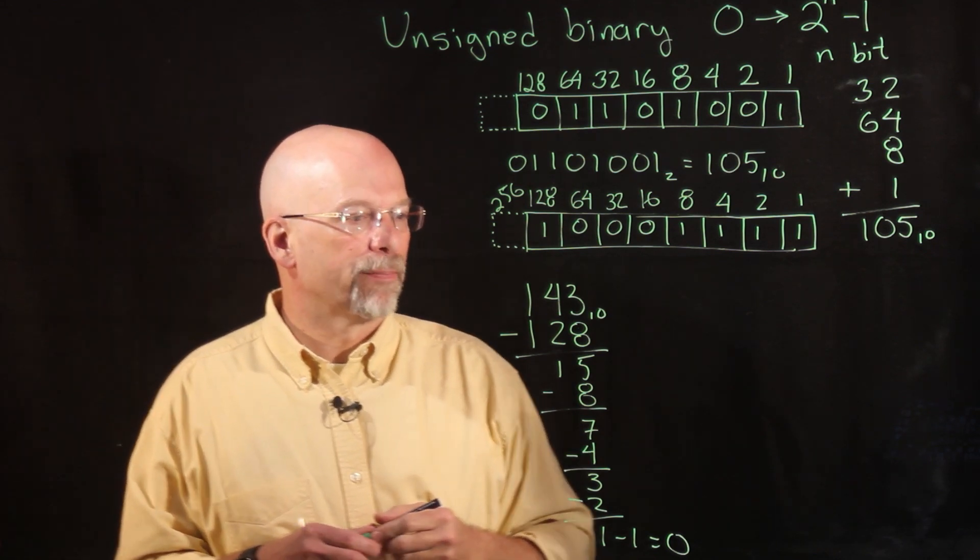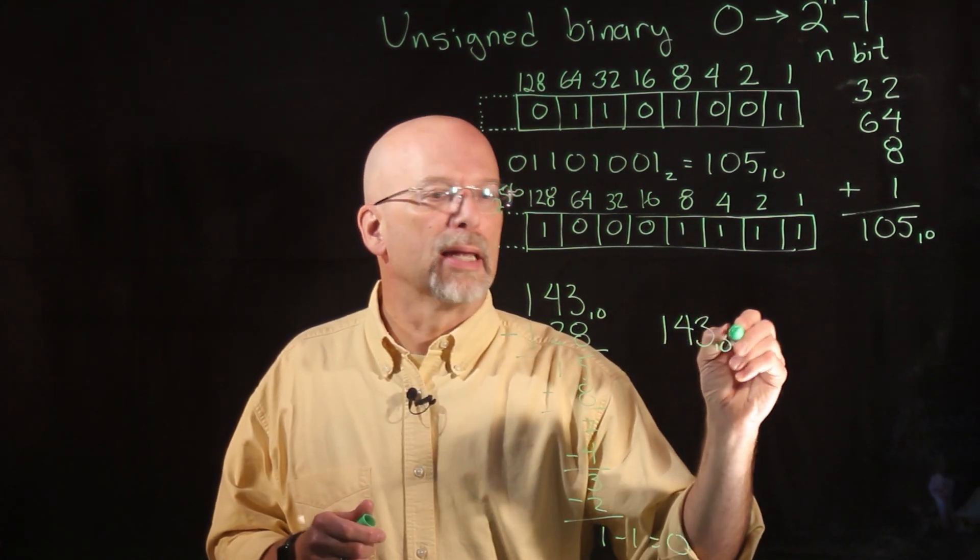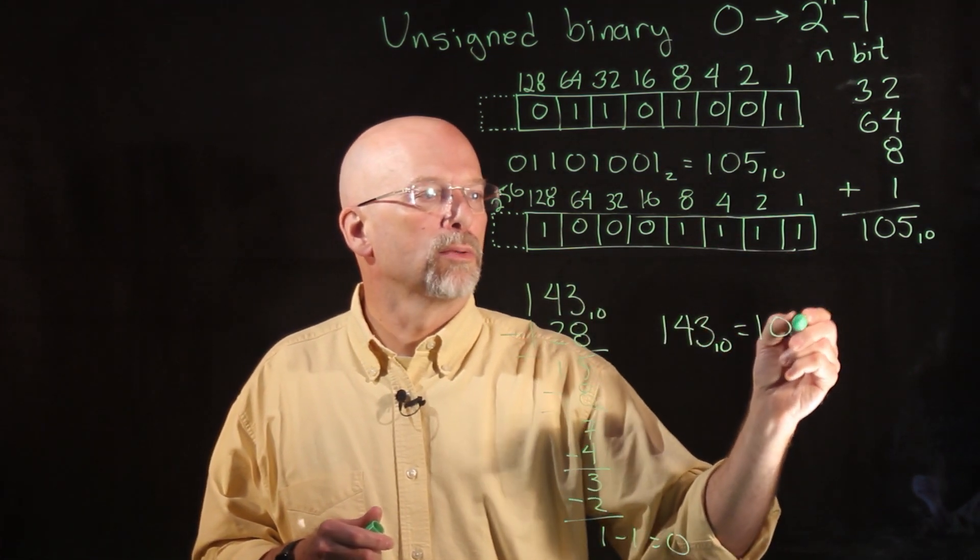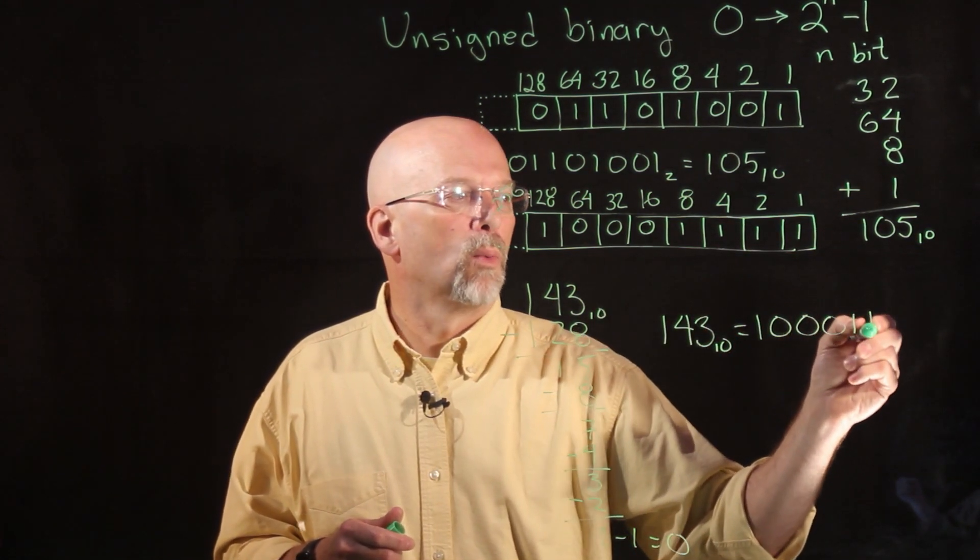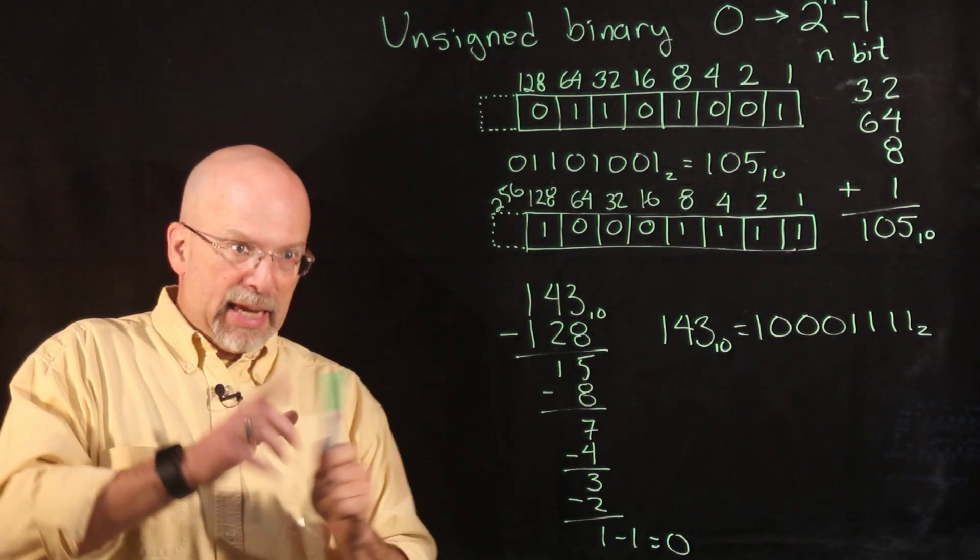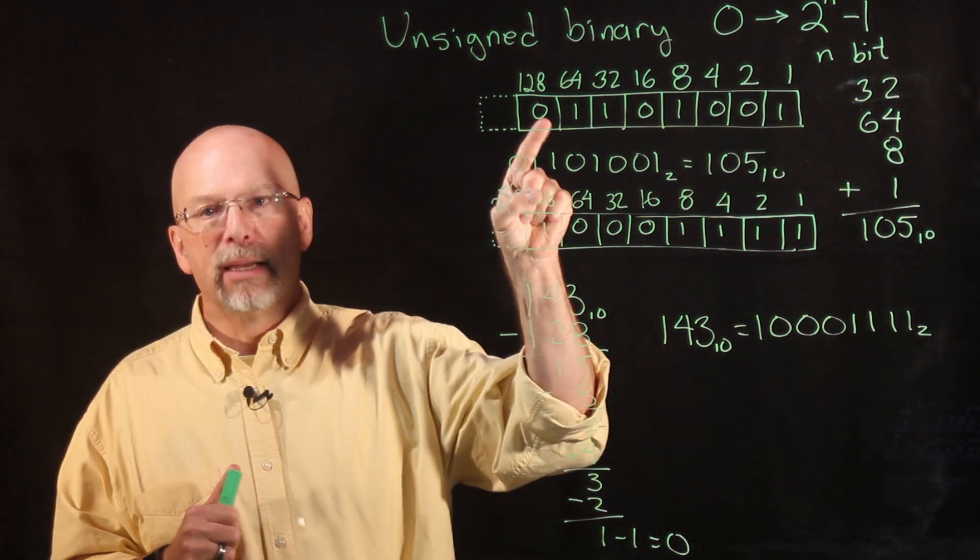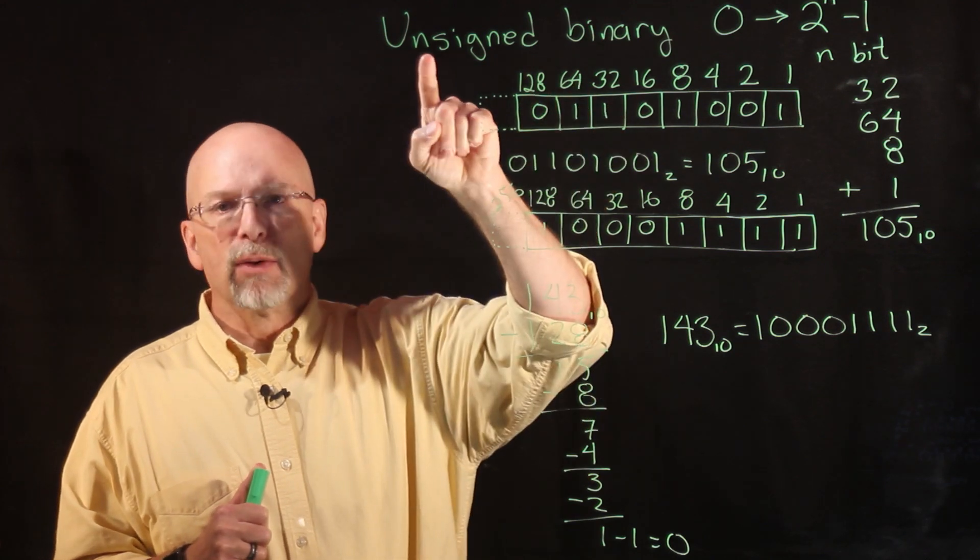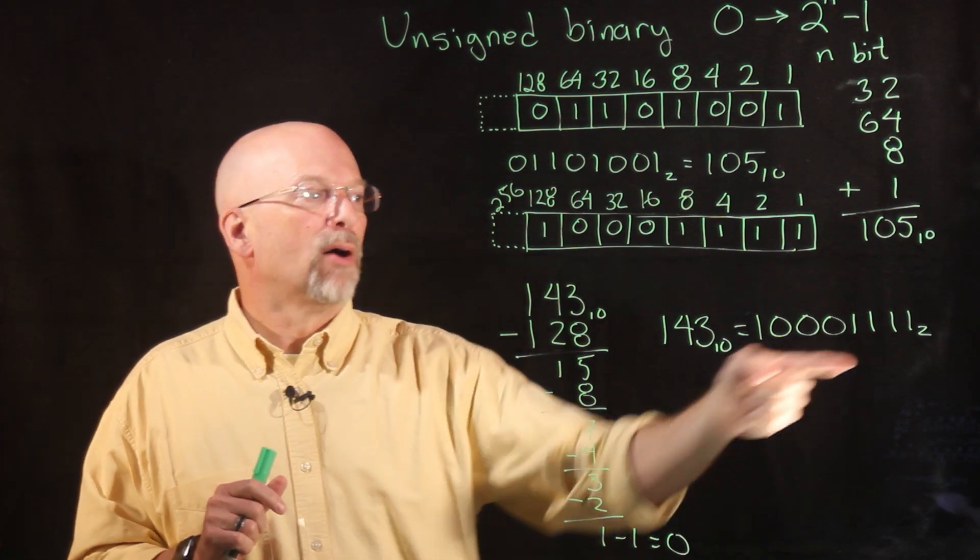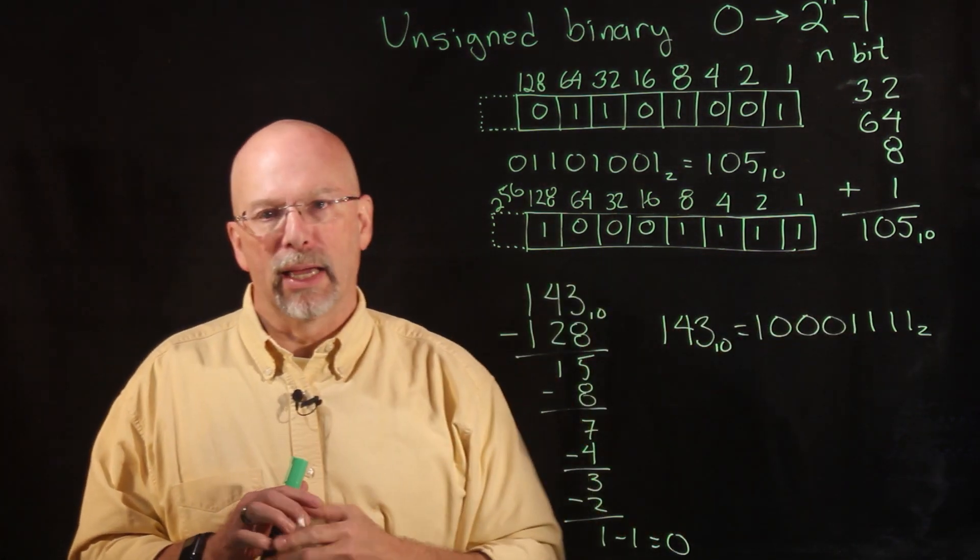So what we've got is 143 base 10 is equal to that pattern of ones and zeros, 10001111 base 2. Now the key is, this is just one way of representing a decimal number in binary. This is, once again, referred to as unsigned binary. We will talk about signs later on, but right now positive, you know, non-negative values are what we're looking at representing here.